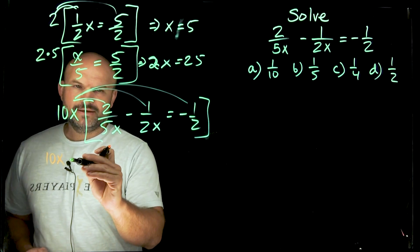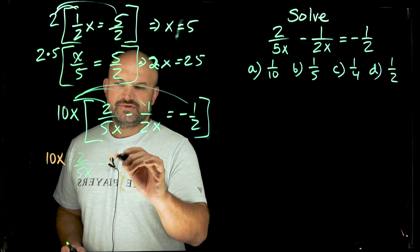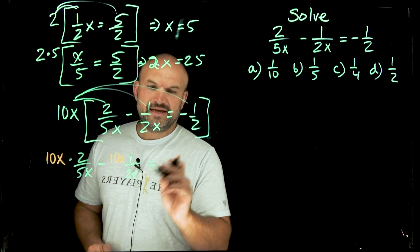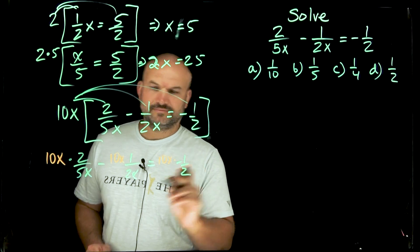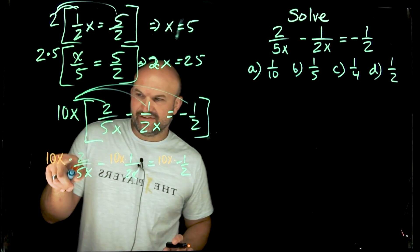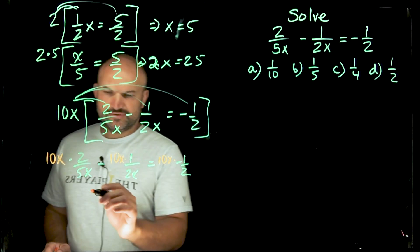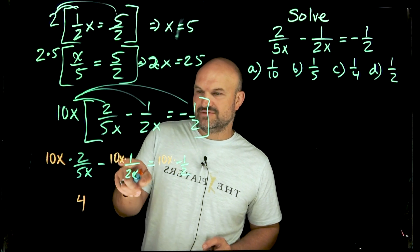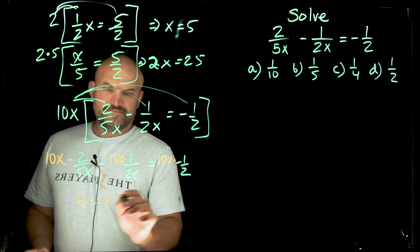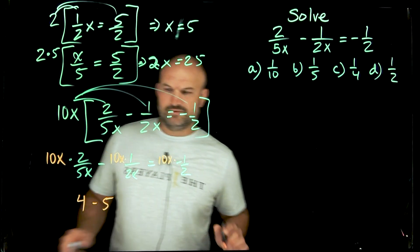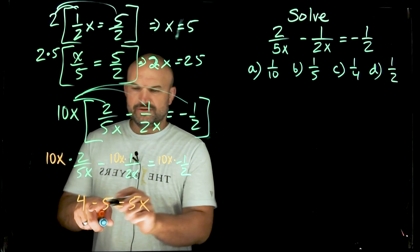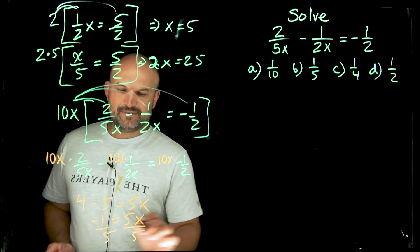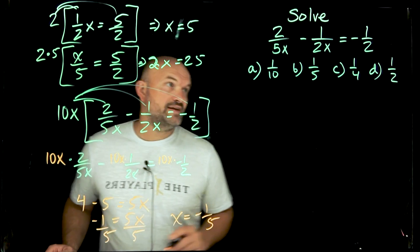So I have 10x multiplied by 2 over 5x, minus 10x times 1 over 2x, equals 10x times negative one half. Now, 5x evenly divides into 10x two times, and 2 times 2 gives me 4. Over here, 2 divides into 10 five times, the x's divide out, giving negative 5. Then 2 divides into 10x giving 5x. So 4 minus 5 is negative 1, equals 5x. Dividing both sides by 5 gives x equals negative one fifth.